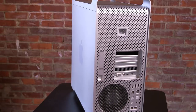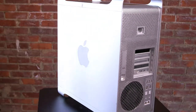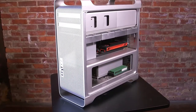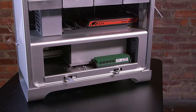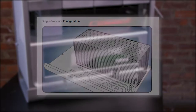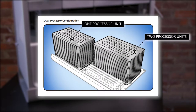Another quick way to identify the configuration is to open the side panel and inspect the processor heat sinks on the processor board. The single processor configuration has one big unit, and the dual processor configuration has two units.